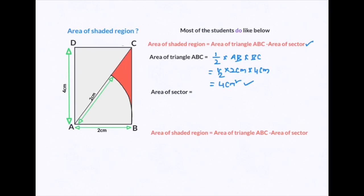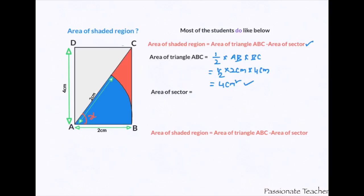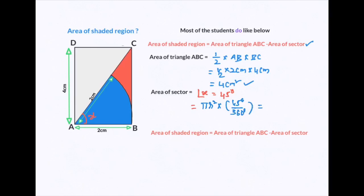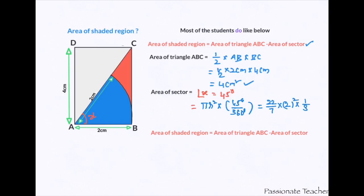But while finding the area of the sector, which is mentioned in blue color here, most students make the mistake of considering the angle as x and taking the value of x as 45 degrees. They proceed to find the area of the sector using the formula pi r² × 45°/360°. With pi as 22/7, radius 2 cm, and 45/360 simplifying to 1/8, this gives a sector area of 1.57 cm².